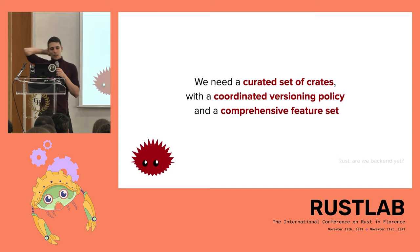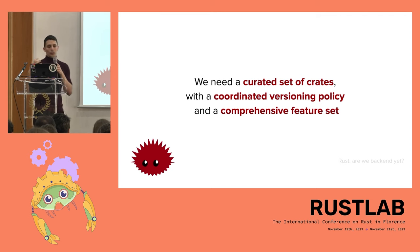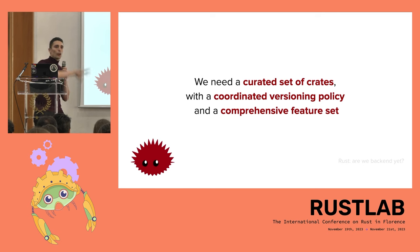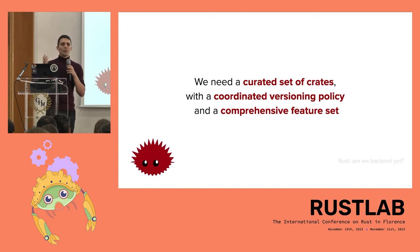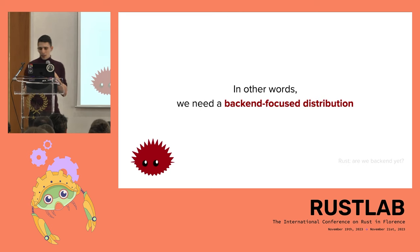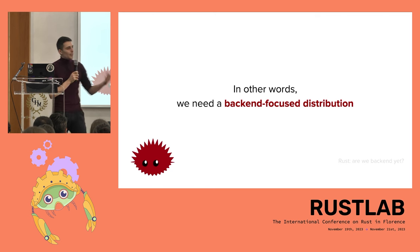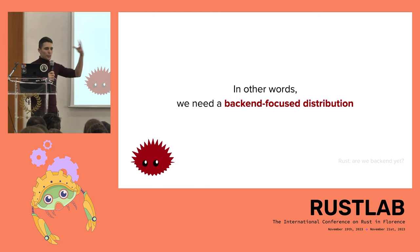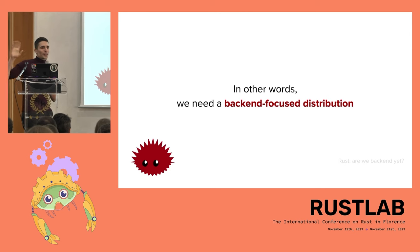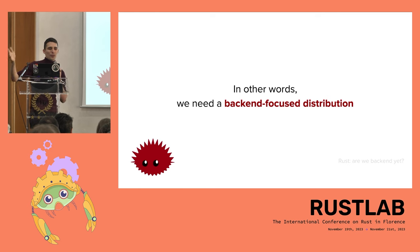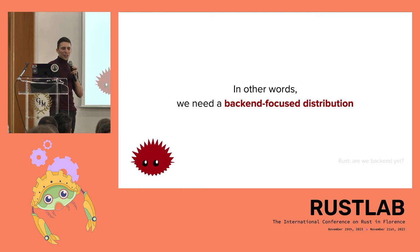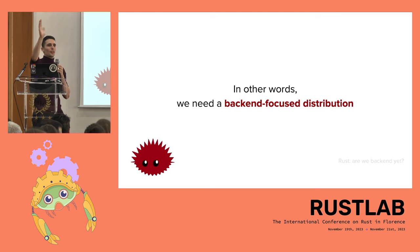What we need — and this comes up in conversations with folks getting started with Rust — is a curated set of crates, a set of functionality that covers the spectrum of what people need to do, with a somewhat coordinated versioning policy. In other words, a backend-focused distribution in the spirit of a Linux distribution. This is not the standard library — the standard library's versioning policy is essentially 'we don't version,' which isn't good enough for a domain like backend that changes. You can't say 'this is the solution we'll use for the next 70 years.' Otherwise you end up like Python.